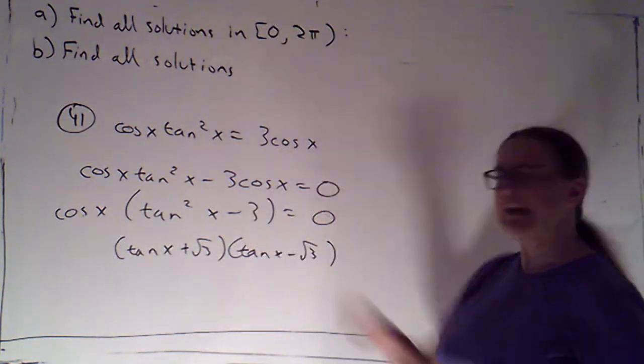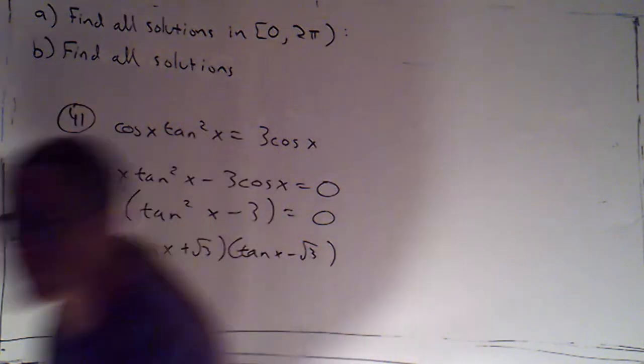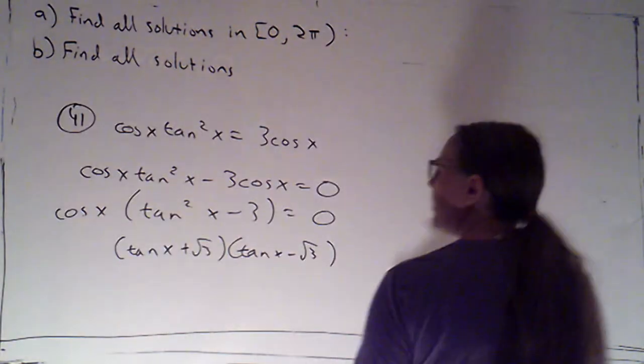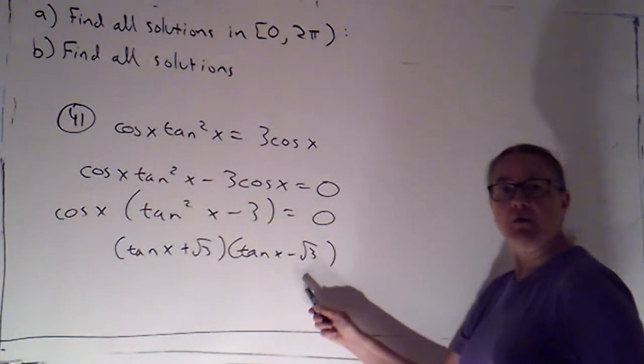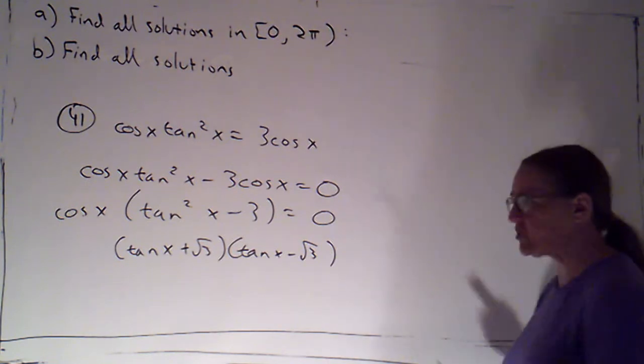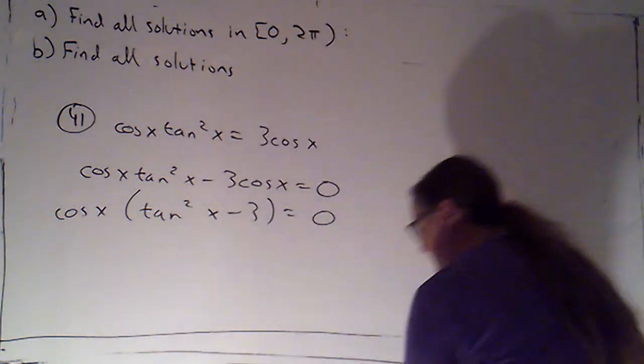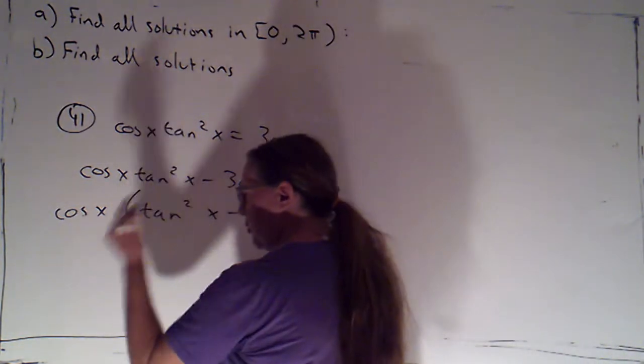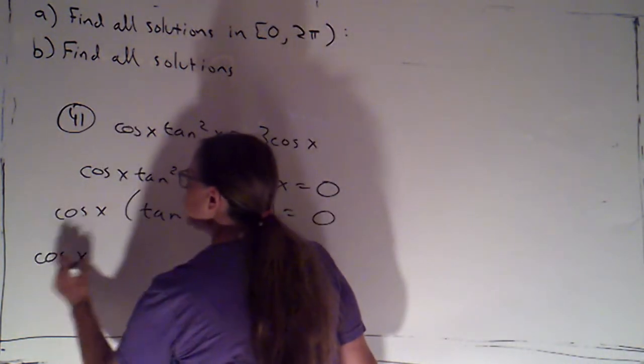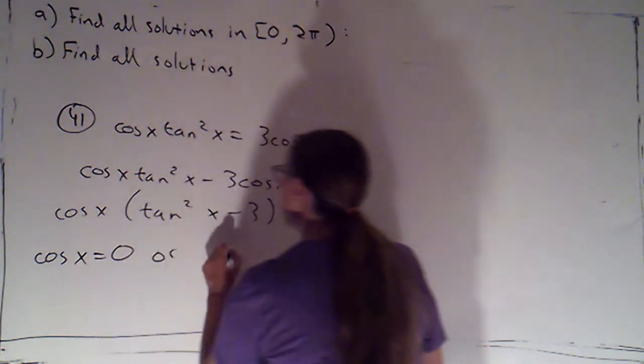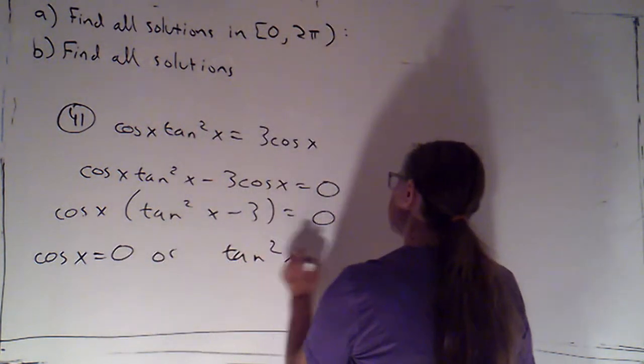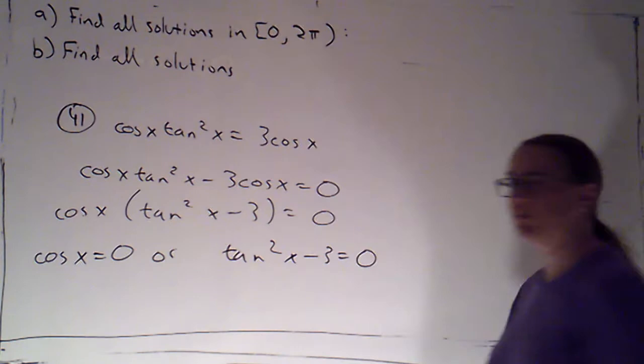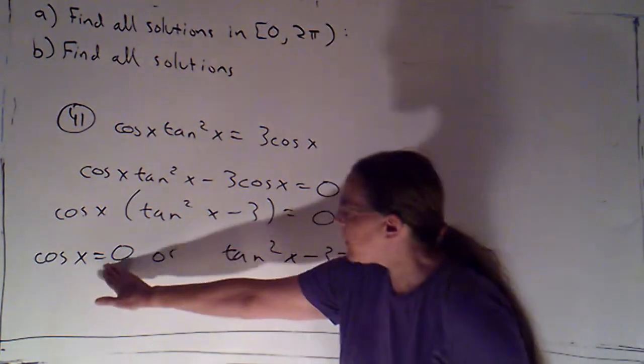I'm actually going to choose to keep that together as one thing and deal with the whole thing all at once. But I wanted to show you this, because if you did it that way, you're certainly right, and you should get the same answers. I'm going to just keep that together as one big quadratic factor. And say this means either cosine x is zero, or tan squared x minus 3 is equal to zero.